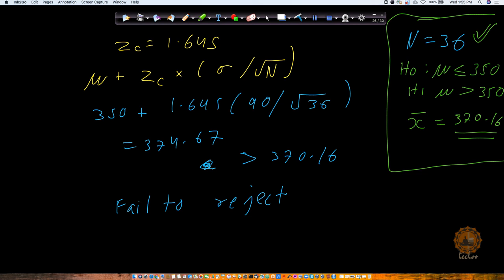Now when I am going to calculate for this, what am I going to do? So my μ was 350 plus Z critical, Z critical is 1.645 which we just calculated, 90 is my standard deviation. So let's say this is also given to you, population standard deviation is 90 and n is 36. So we got 374.67.